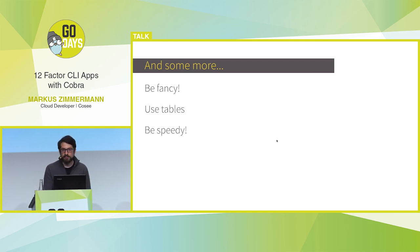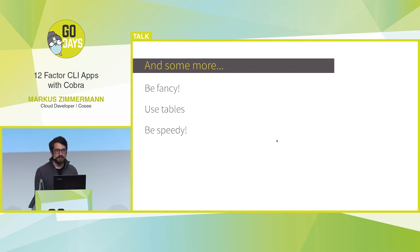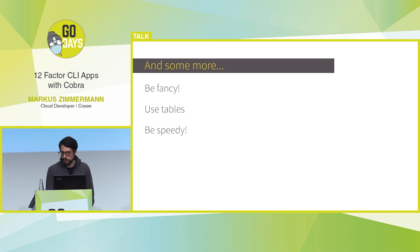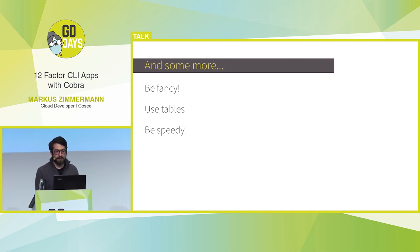An important thing is that you should be speedy with your CLI. Around one second response time per command is good, but it should never be over two seconds because then the CLI feels unresponsive. If you have a long-running task, you should always use a progress bar or something like that. Even with a small progress animation, your CLI already feels faster.